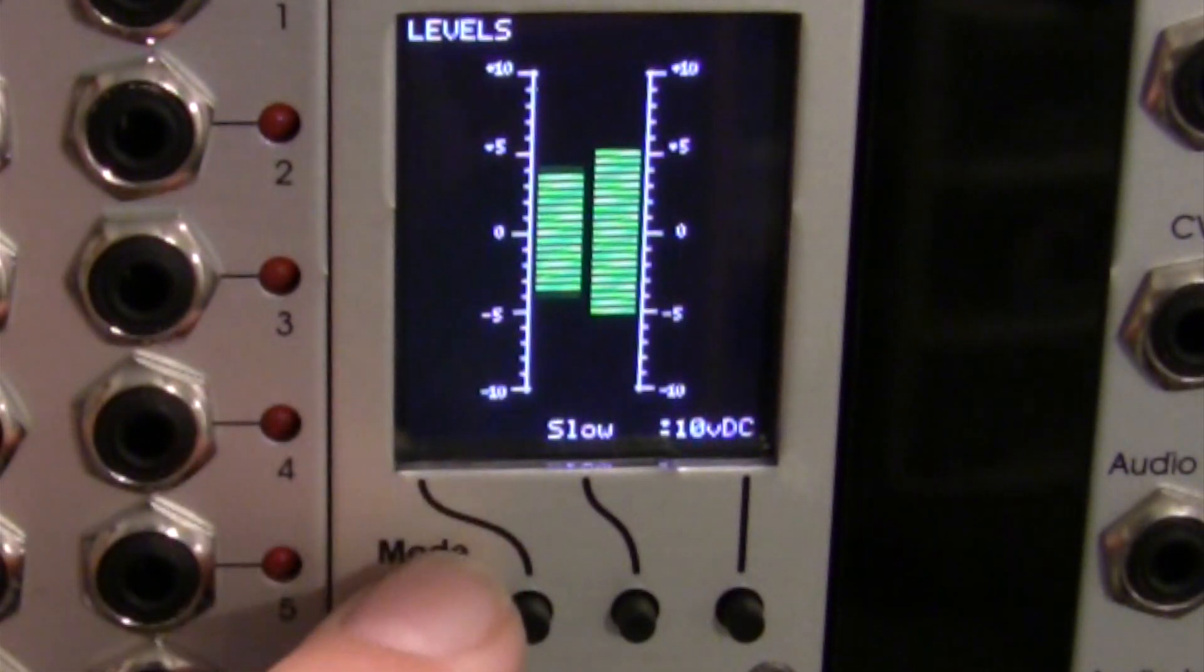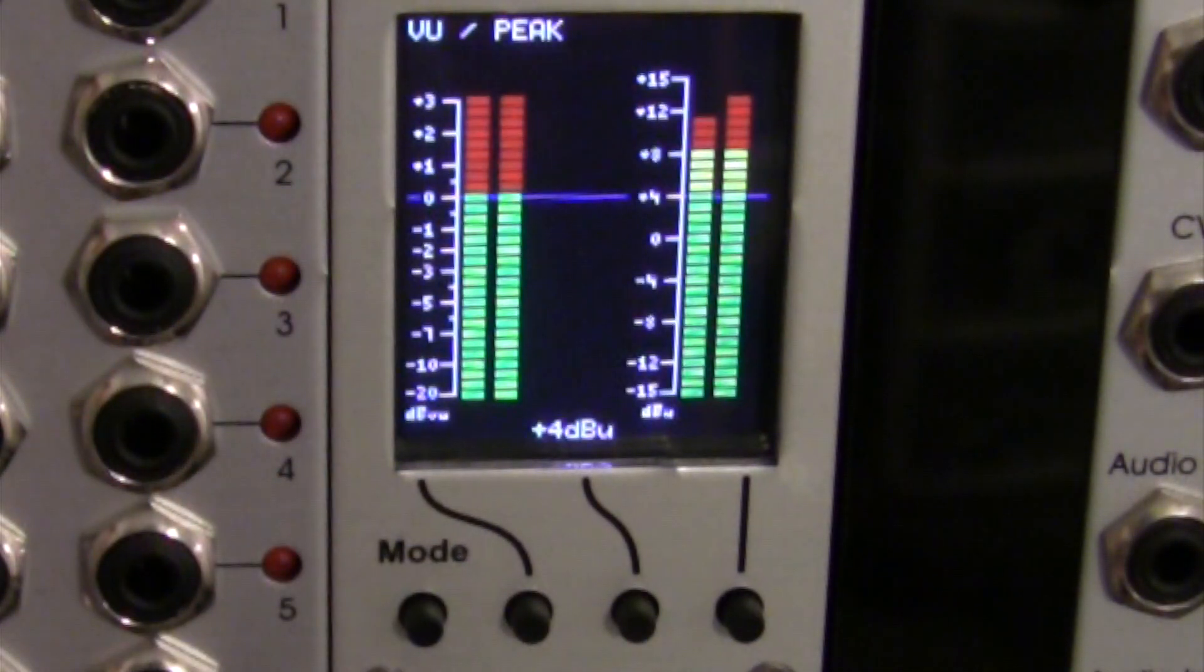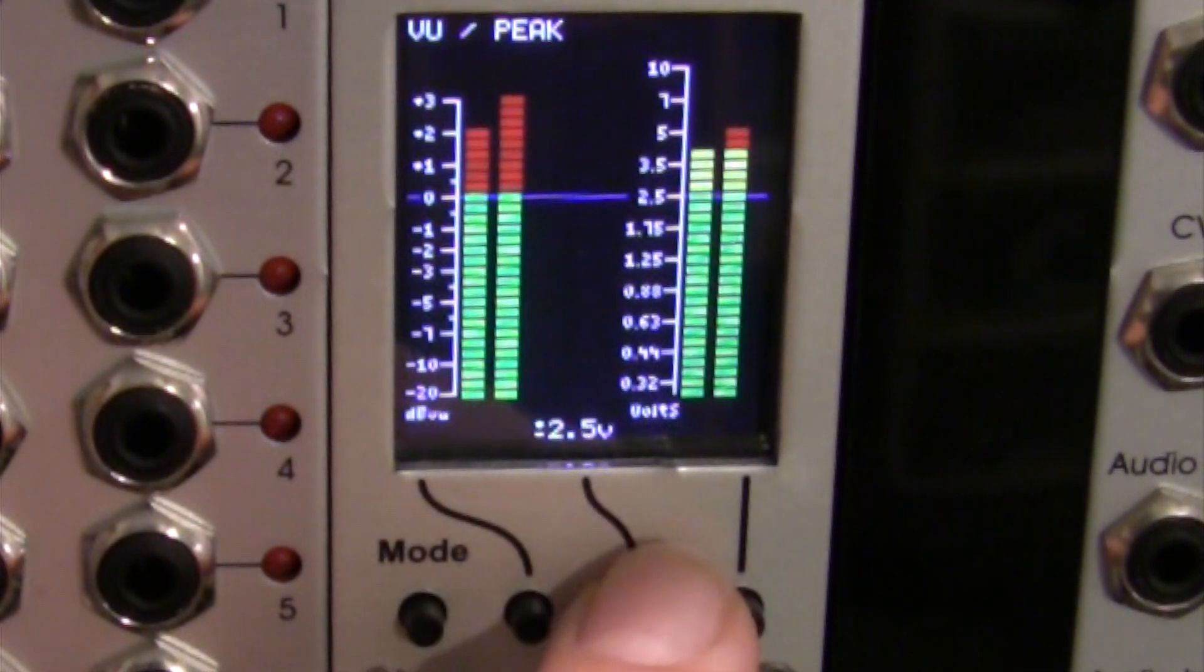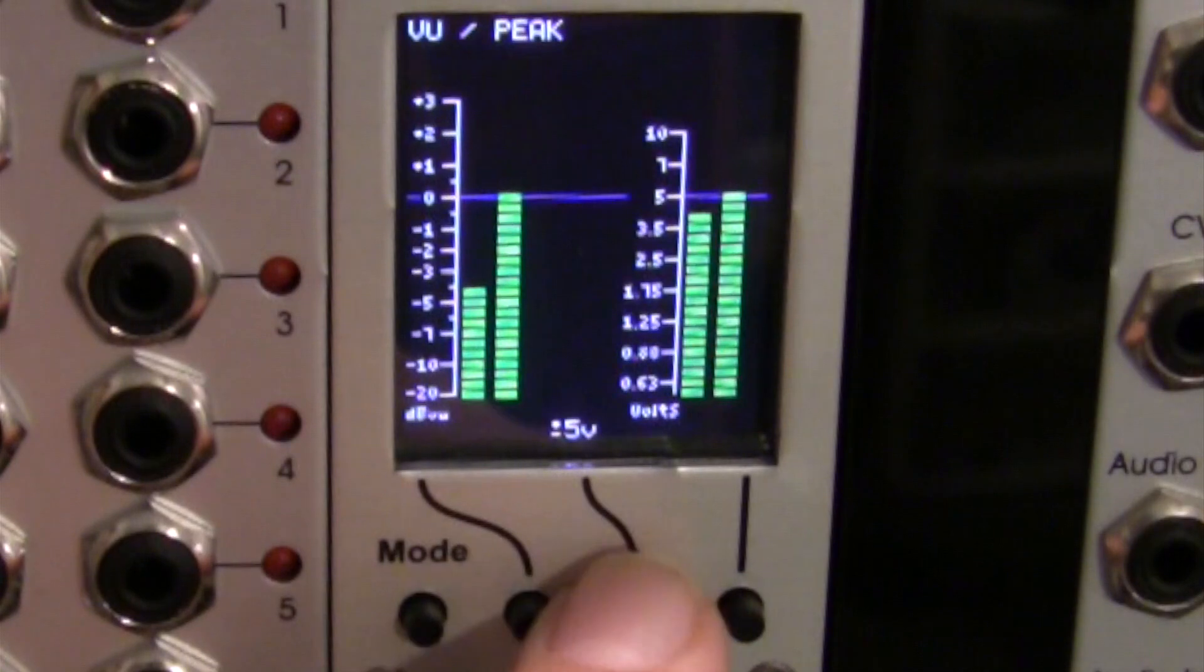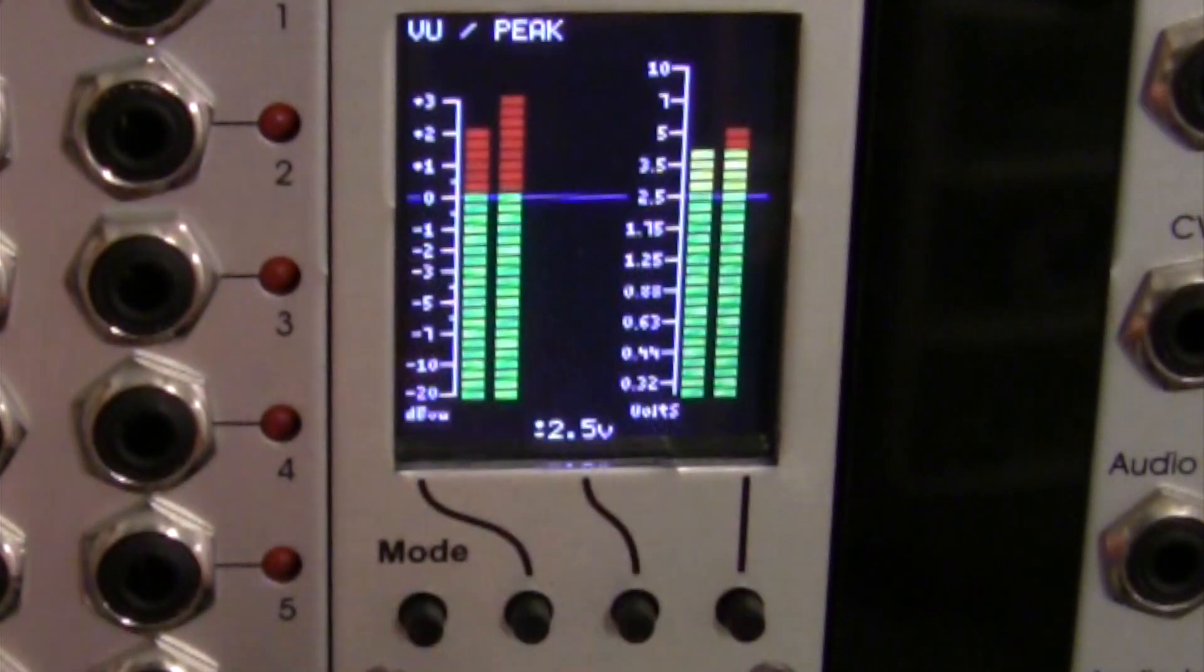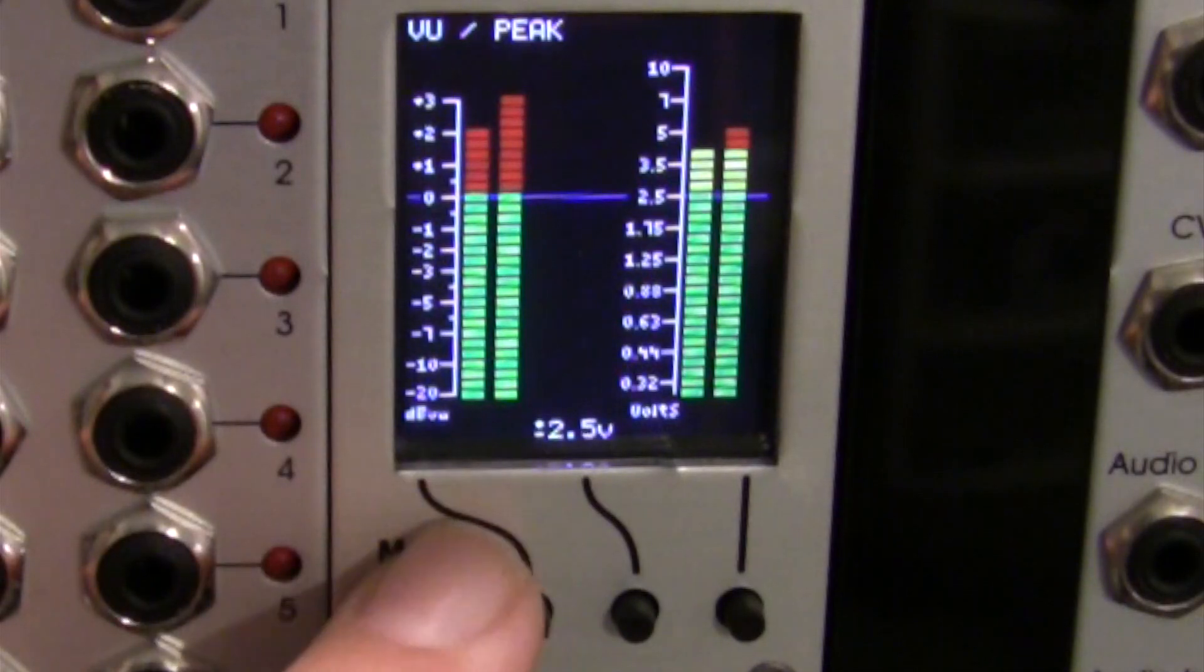Moving right along to mode number five, these are our VU meters or our peak meters. You have various changes you can do: plus or minus 2.5 volts, plus 5, and plus 4 decibels. Okay, let's go right into the next mode.